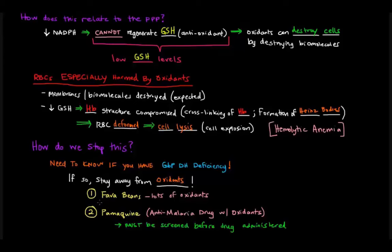Some things that have a lot of oxidants are fava beans. In addition, you want to stay away from pamoquin, which is this anti-malaria drug.